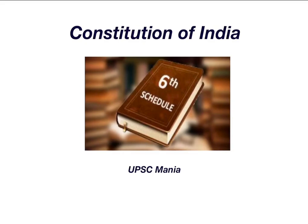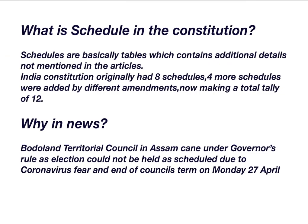Why is the Sixth Schedule in news? We will know that further, but before that we have to understand what a schedule is in our Constitution. A schedule is generally additional details which are not mentioned in our articles. For example, Articles 1 to 4 talk about the Union and its territories — how territories are merged, split, or renamed. These are mentioned in article form.